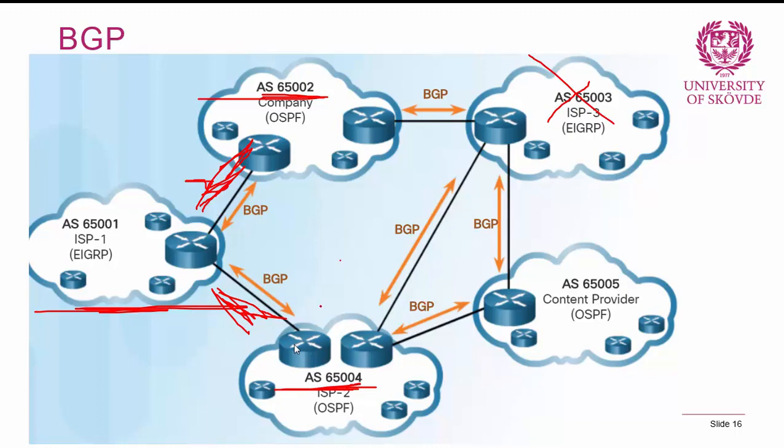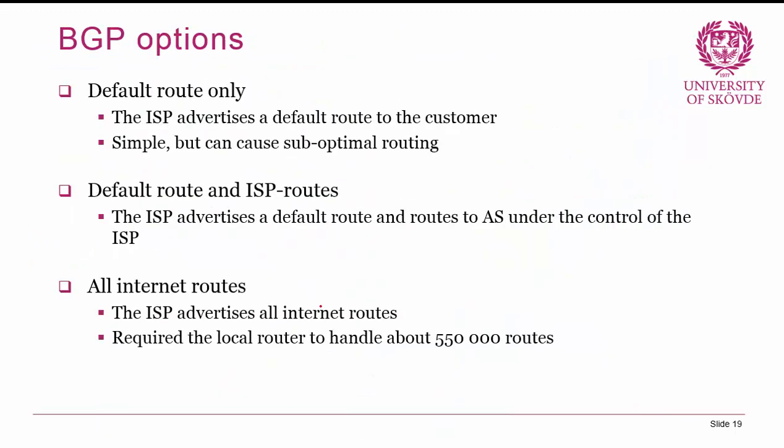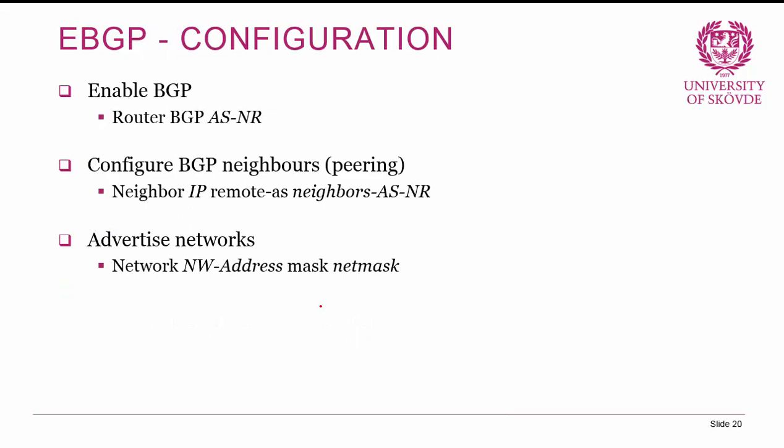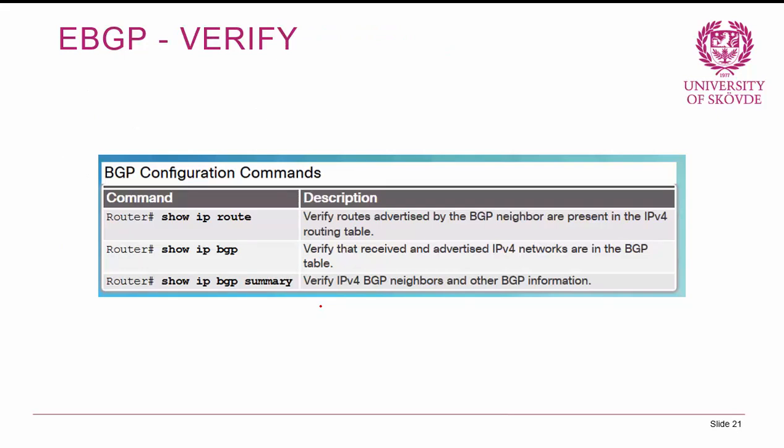For external BGP configuration: first enable it with 'router BGP' followed by your AS number, which is assigned by your ISP — not just a process number. Then configure BGP neighbors or peering with the command 'neighbor' followed by the neighbor's IP, 'remote-as', and the neighbor's AS number. Finally, advertise your networks using 'network' with the network address and subnet mask. Verification commands include 'show IP route', 'show IP BGP', and 'show IP BGP summary'.